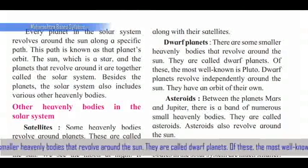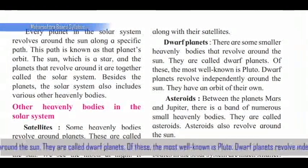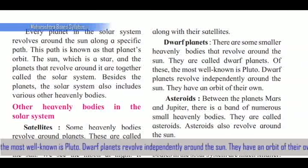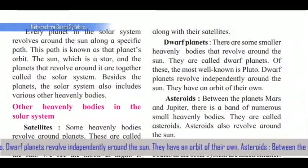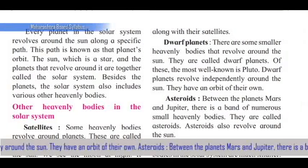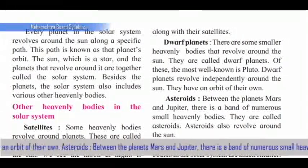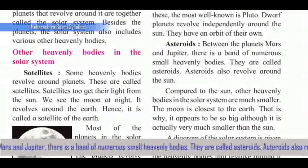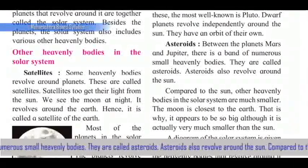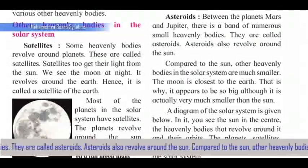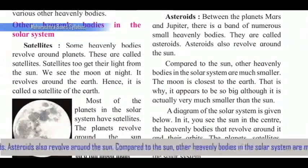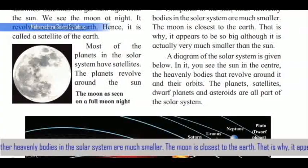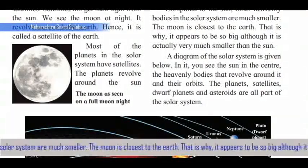There are some smaller heavenly bodies that revolve around the Sun — they are called dwarf planets. The most well-known of these is Pluto. Dwarf planets revolve independently around the Sun and have an orbit of their own. Between the planets Mars and Jupiter, there is a band of numerous small heavenly bodies called asteroids. Asteroids also revolve around the Sun.